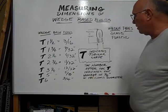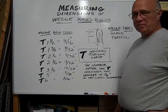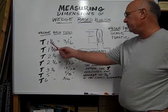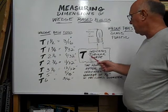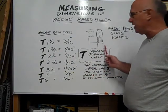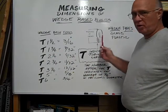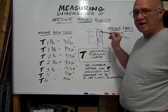Glass wedge-based bulbs are indicated by a T number for diameter. The T determines that it is a tubular shaped bulb, flat on the sides and usually round on the top.